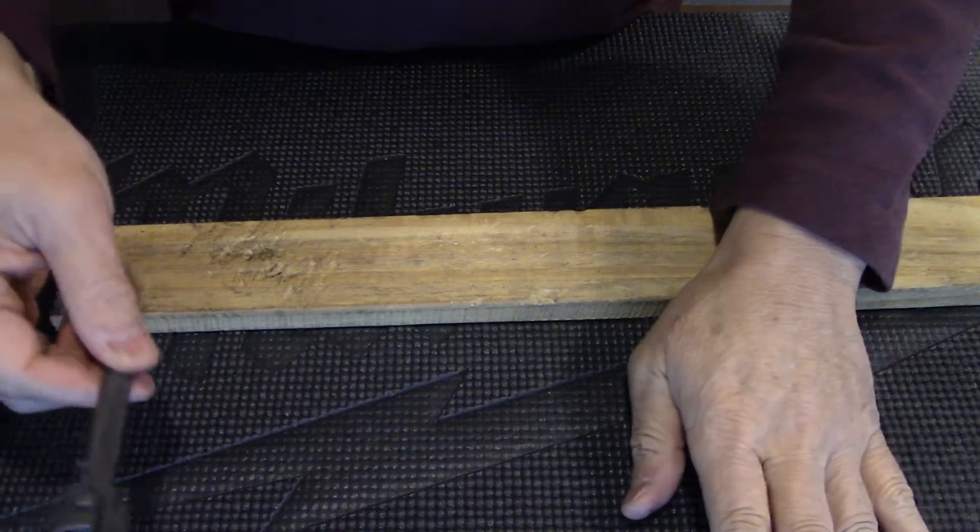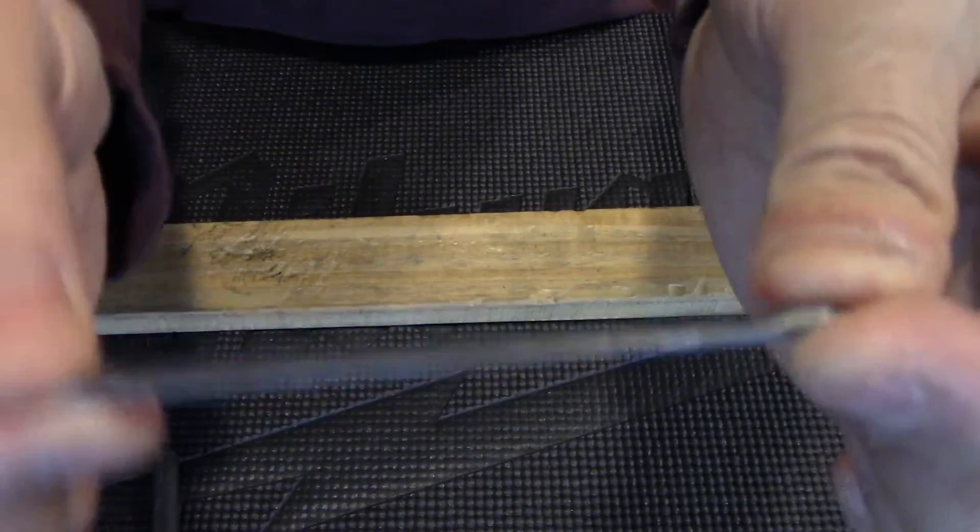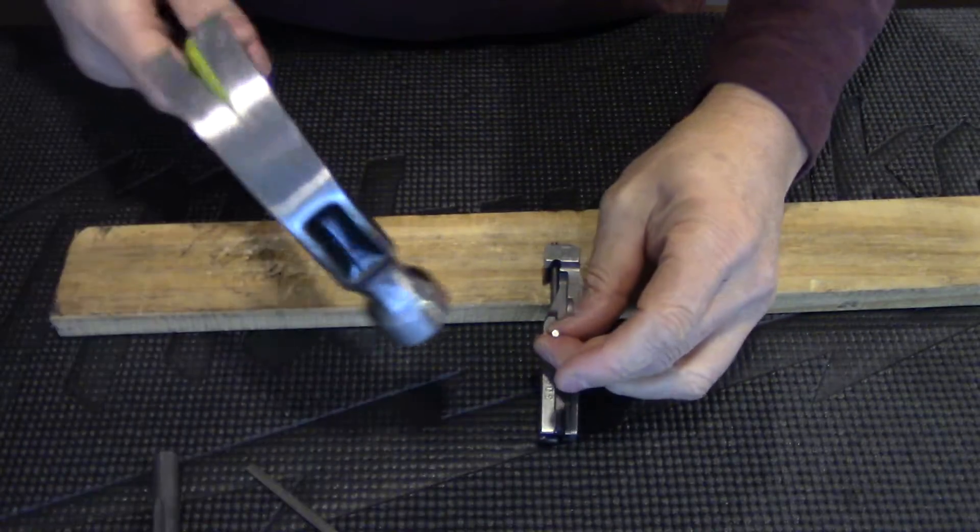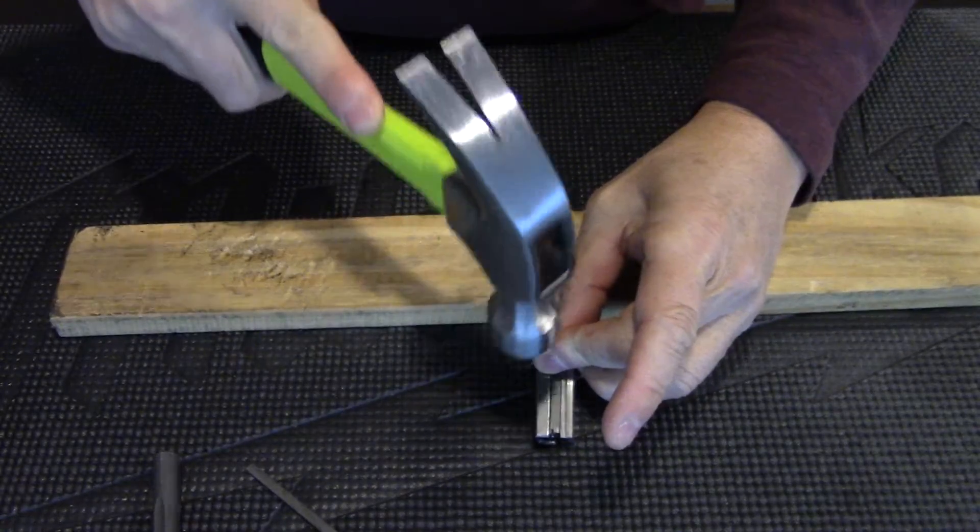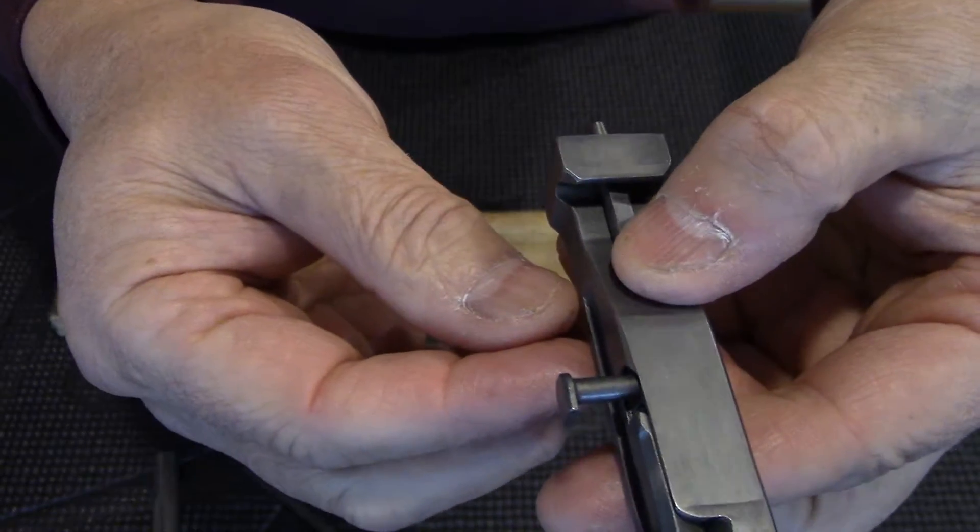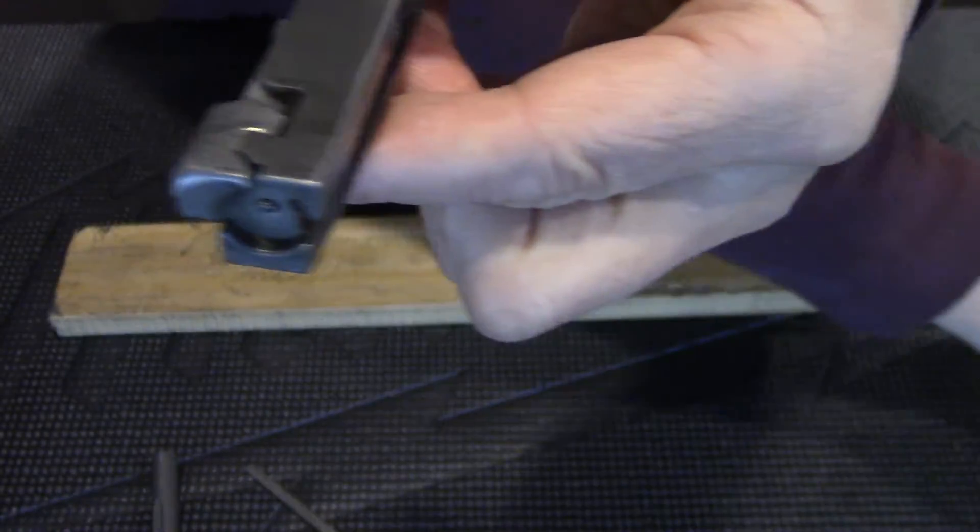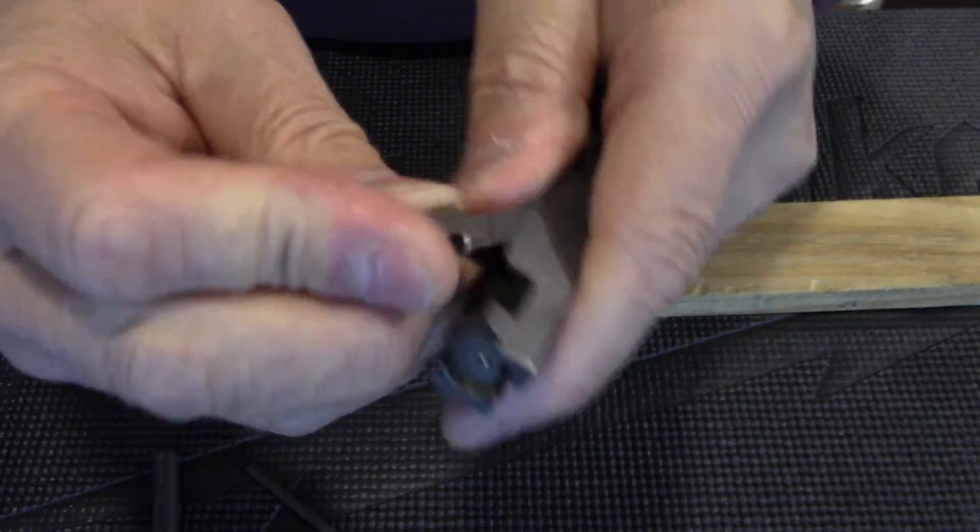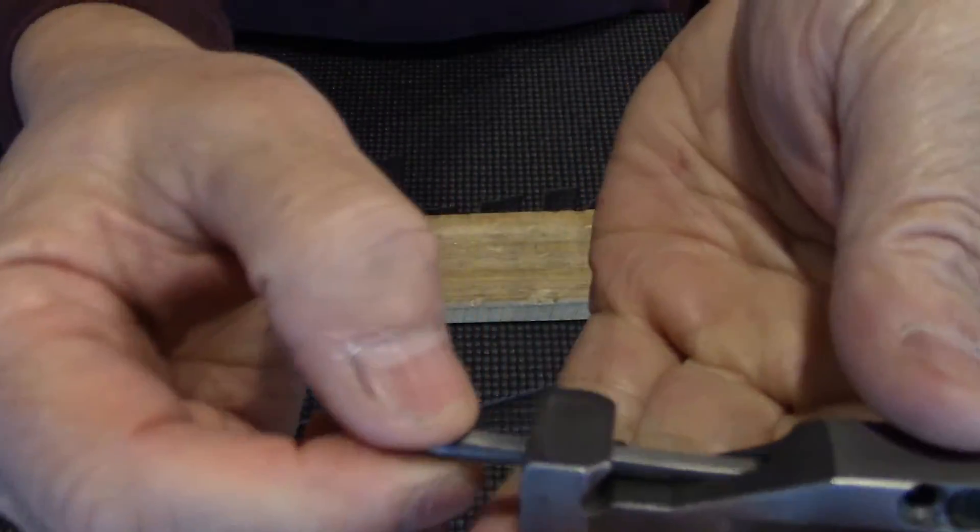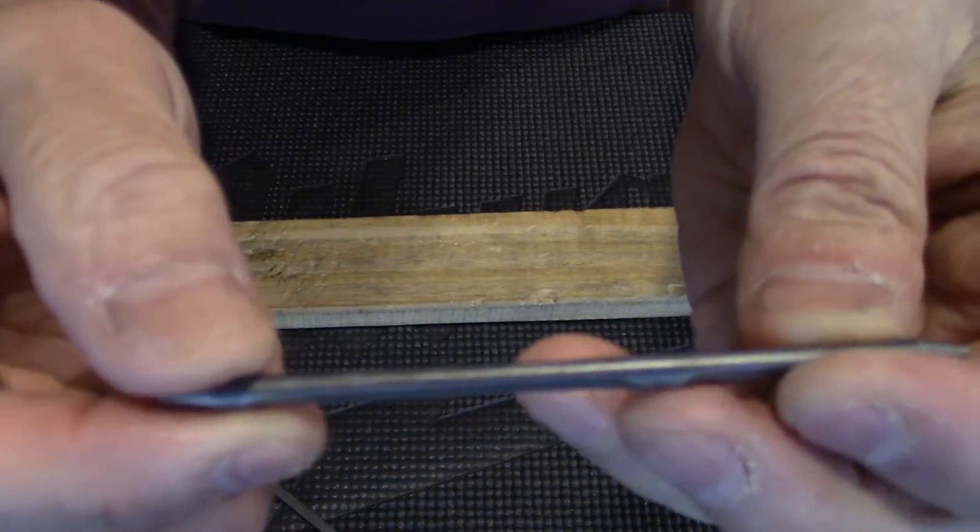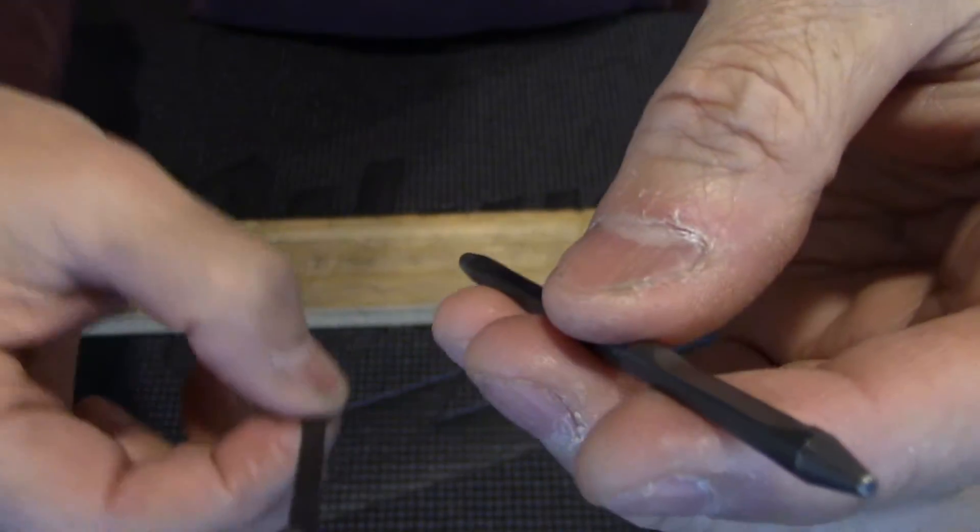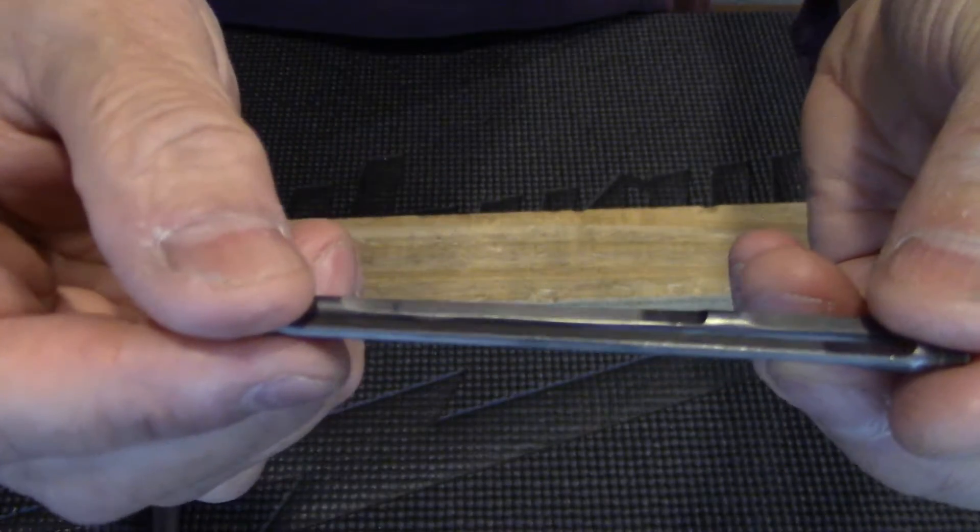Now before I reassemble the bolt, I want to compare the Type 81 firing pin to the SKS firing pin. Remove this pin, and then the extractor with the spring, and the SKS firing pin comes out. I want you to watch carefully at the comparison of the two.